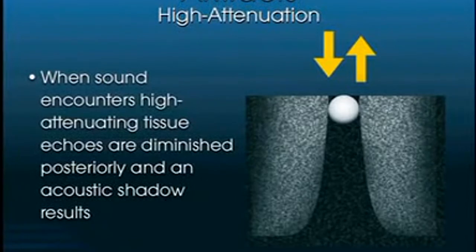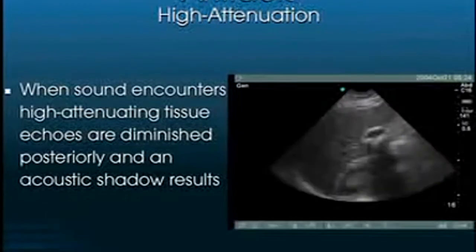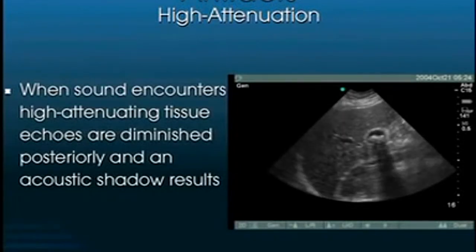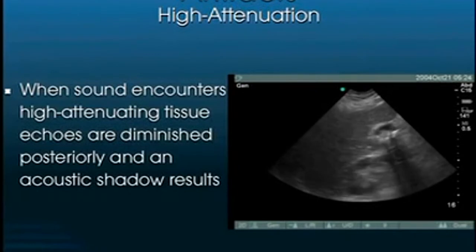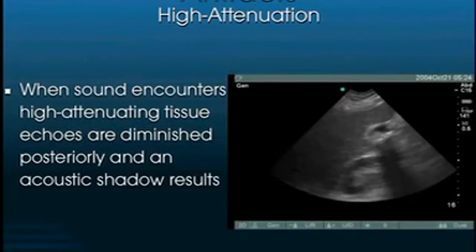Attenuation means the progressive weakening of sound as it travels into and out of the body. When sound encounters highly attenuating tissue, the echoes posterior to it are diminished, producing an acoustic shadow. This occurs with very high-density tissue such as gallstones — the sound is attenuated as it encounters the gallstone, and the shadow that persists is what defines the gallstone.